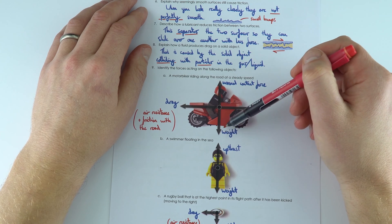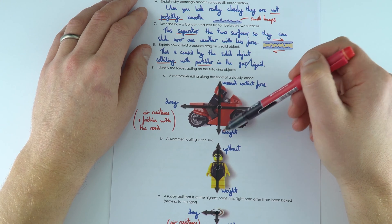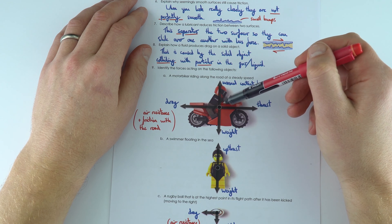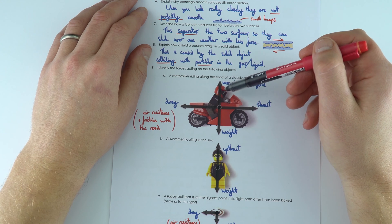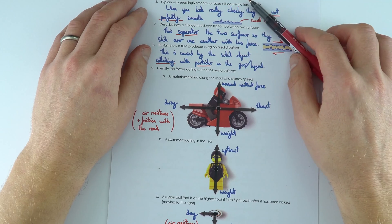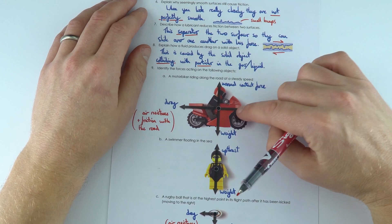We've also got the weight acting down, which equals m times g. Then there's an equally sized force in the opposite direction upwards called the normal contact force. This is caused by the road pushing back up on the motorbike.